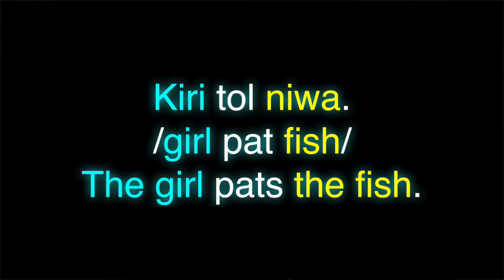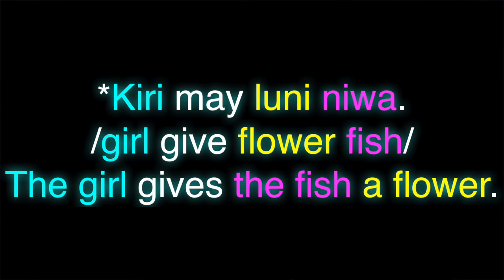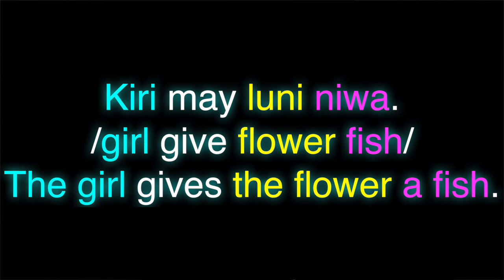If that's a transitive clause, this is a ditransitive clause: 'Kiri mai niwa luni' — the girl gives the fish a flower. Notice that the flower is last and the fish is directly in between the flower and the verb. This is because indirect objects go directly after the verb in English. In fact, if you flipped the order to the opposite order, 'Kiri mai luni niwa,' it would actually mean the opposite thing — the girl gave a fish to the flower — which is just ridiculous.